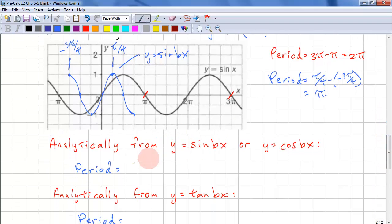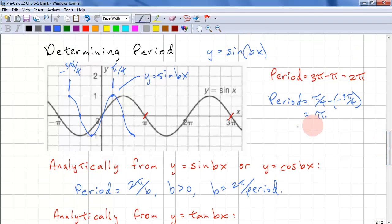Analytically, we can calculate the period from the function y equals sin bx or y equals cos bx. The period is 2 pi over b, where b is greater than 0. So b equals 2 pi over the period. For this function we have b equals 2 pi over pi, so b equals 2. This is actually sin 2x.